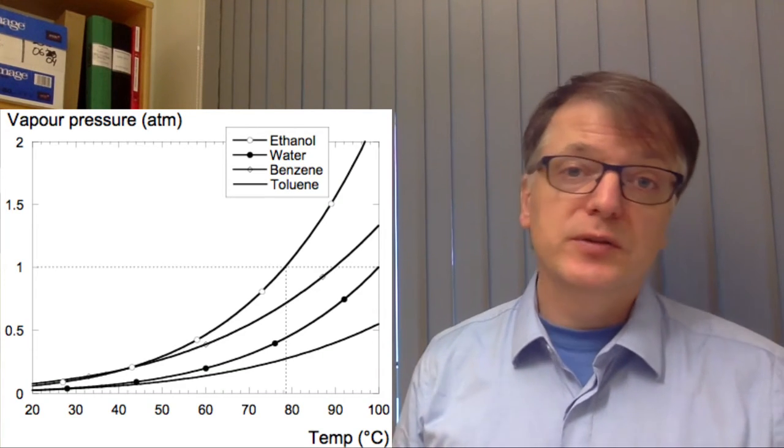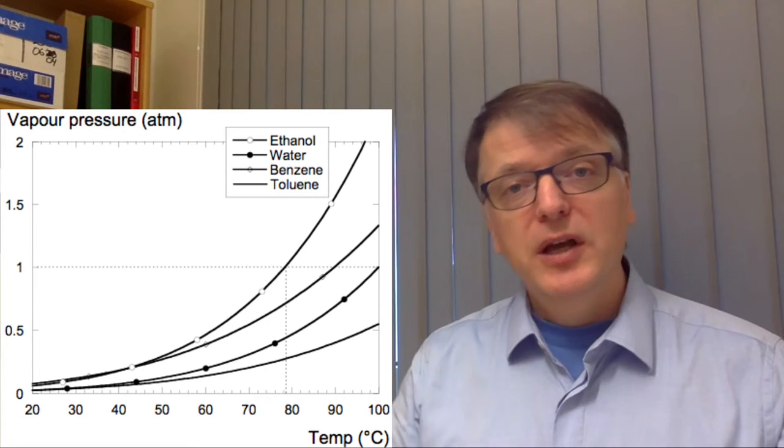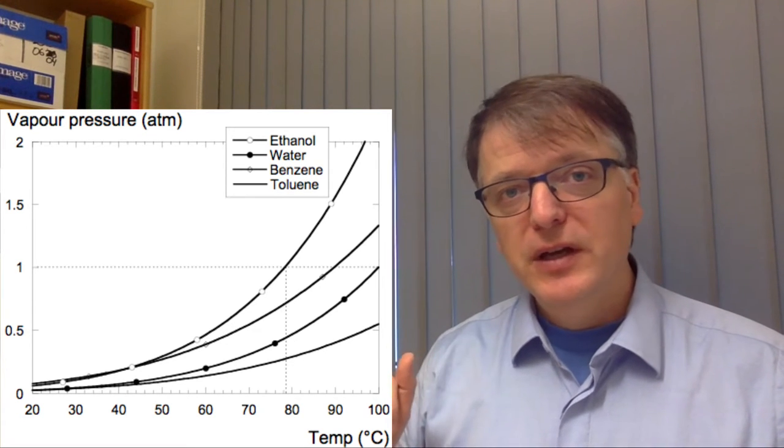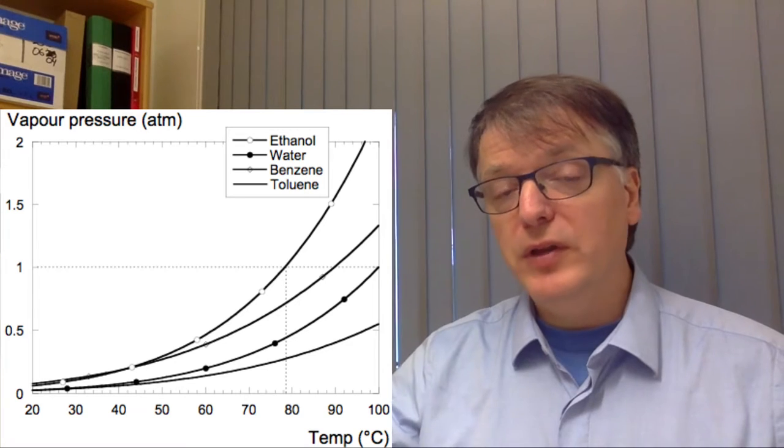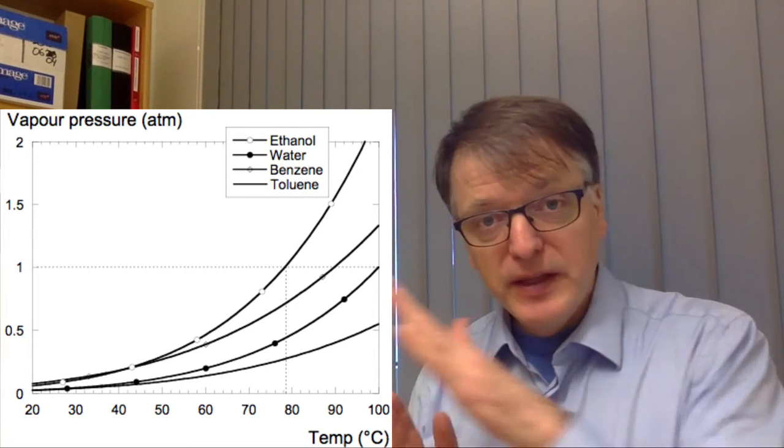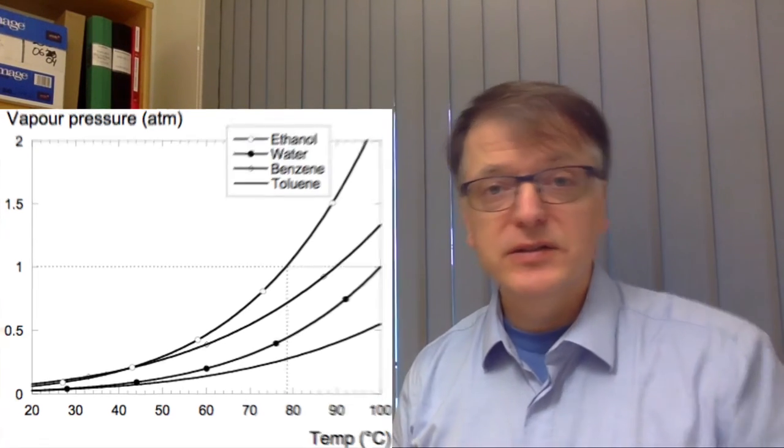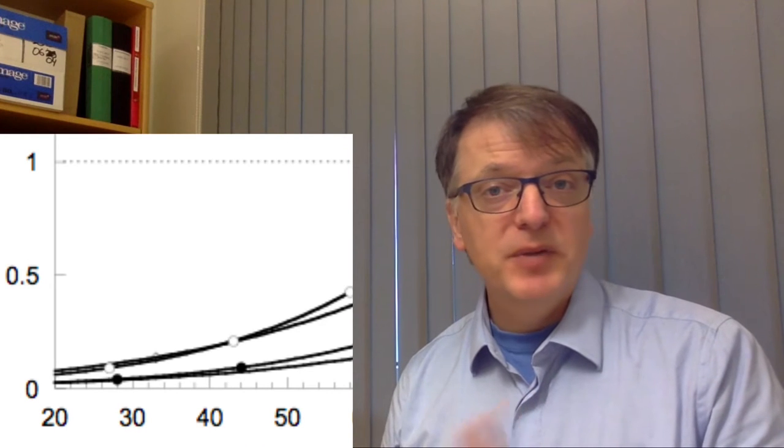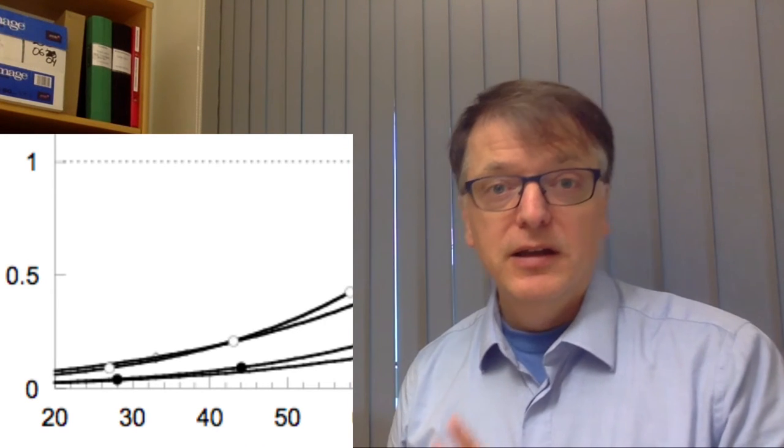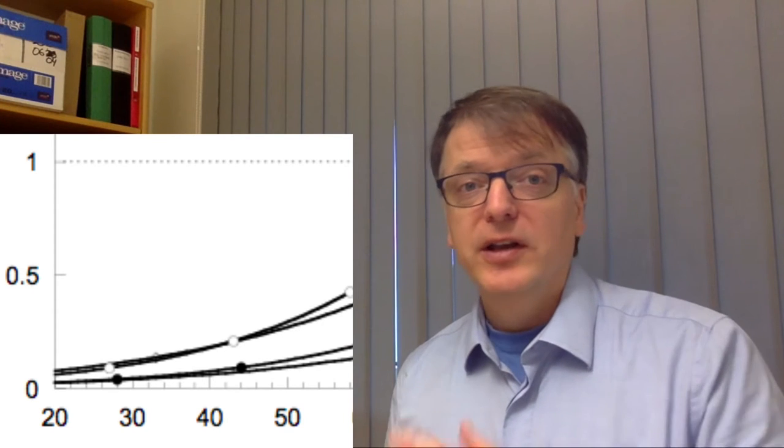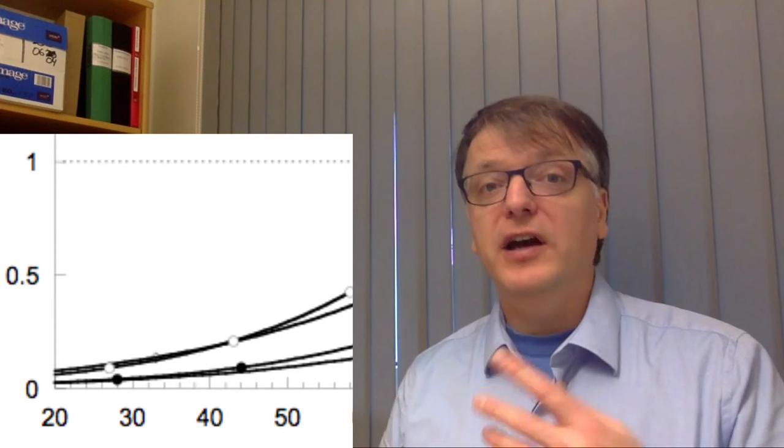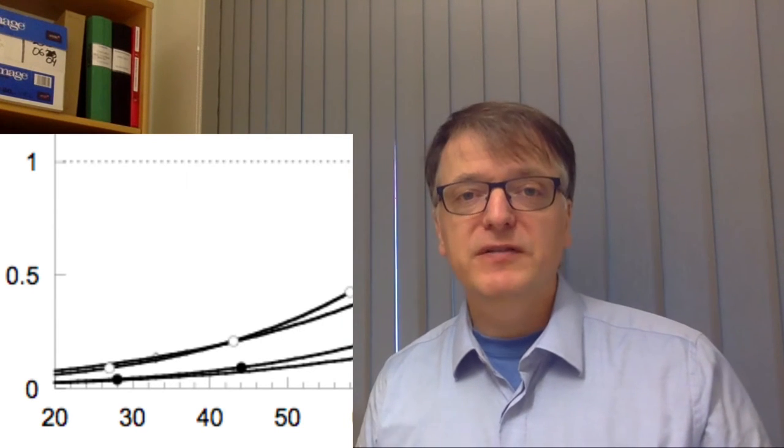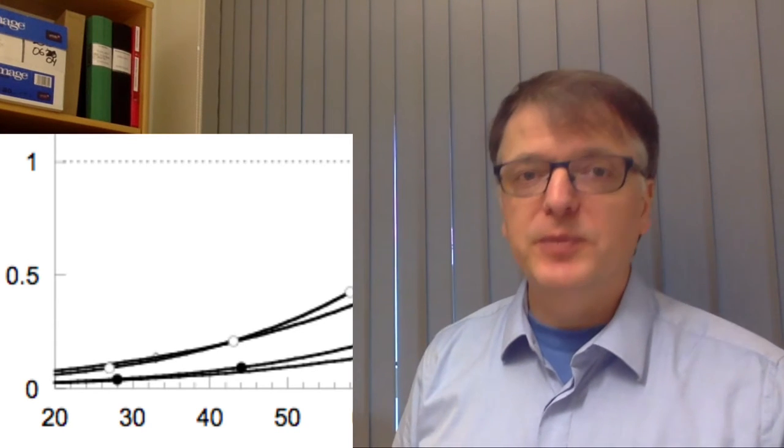You could say that it works due to differences in boiling points, but if you think of the vapor pressure curve, the boiling point is just one point on that curve and these curves might actually intersect. So one substance might be more volatile at lower temperatures and then another substance might be more volatile at higher temperatures. So a difference in vapor pressure is a more accurate way to put it.